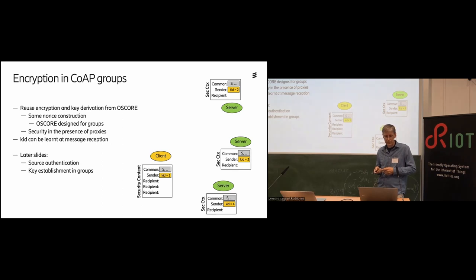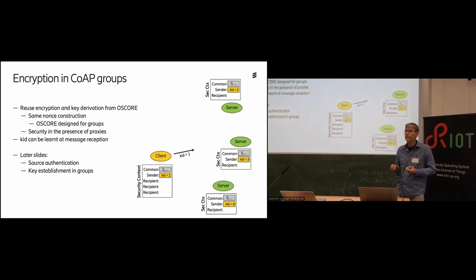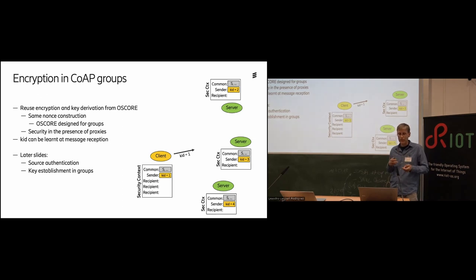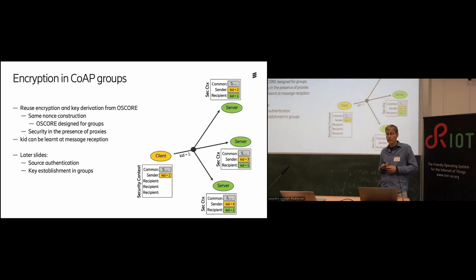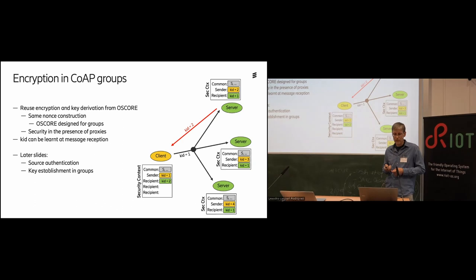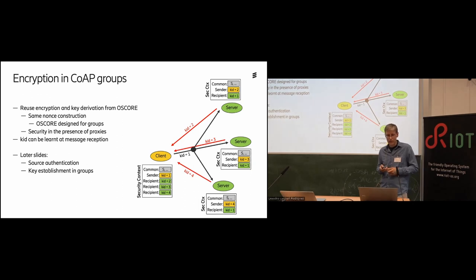OSCORE is based on a shared secret scheme, meaning all nodes need the same secret and key identifiers in their sender context. Given the secret and key identifier, a node derives a sender key and sends it along with its key identifier. The recipient receives the key identifier, derives the same key to verify the message, and can send back their identifiers, allowing the original client to derive the corresponding security context and verify those messages.